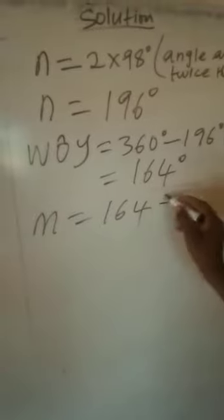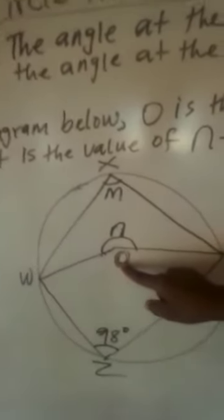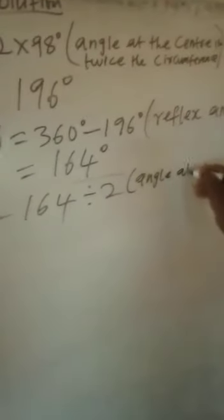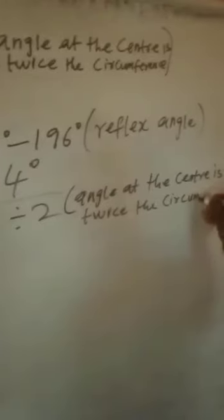Now we are looking for M. For us to get M, M will be equal to 164 divided by 2. We do the opposite because this is the angle at the center — when the angle is at the center, you divide by 2 to get the circumference angle. But when the angle is at the circumference, you multiply by 2 to get the center. So the angle at the center is twice that of the circumference. When we divide, we are going to get 82 degrees.